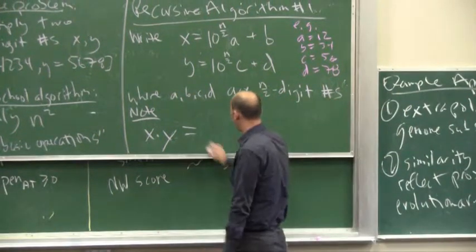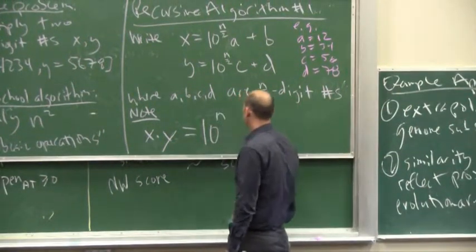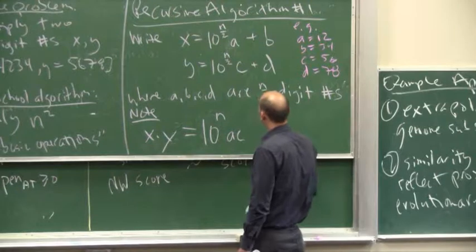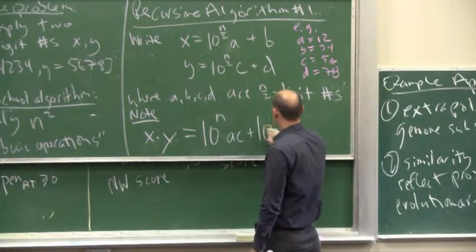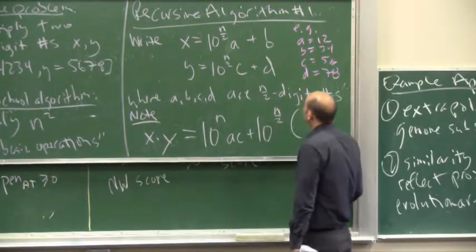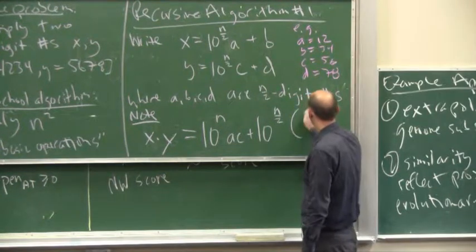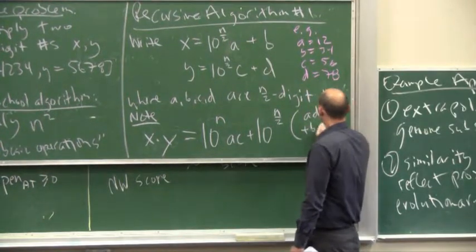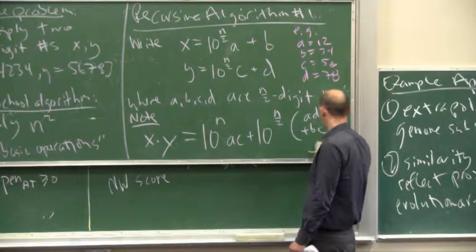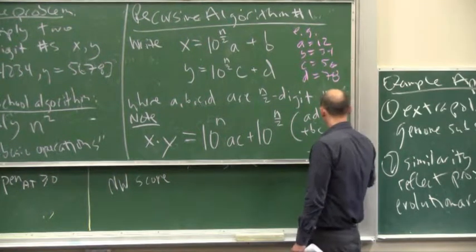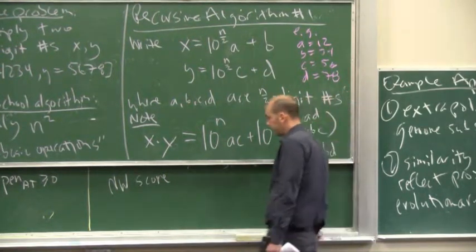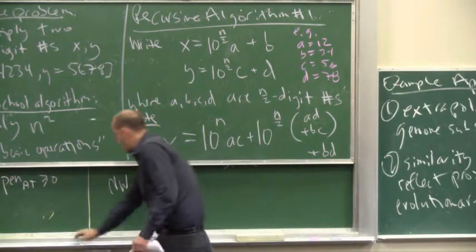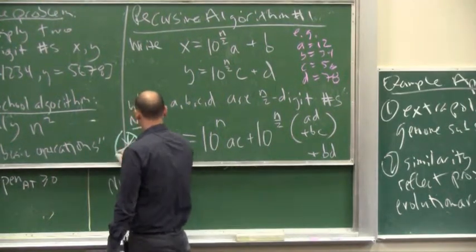So, let's just expand what we have to compute in terms of this decomposition. So, what would it be? Well, so you multiply all the terms out, and you get 10 to the n, AC, plus you get the cross terms, so that's 10 to the n over 2, times AD plus BC plus this final BD term. We're going to call this expression star.